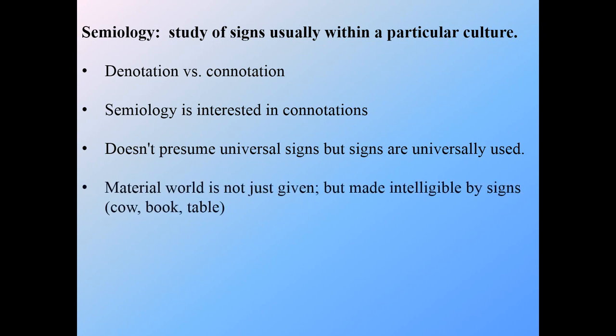The material world is not just given, but it's made intelligible — made comprehensible through signs. In order for us to know what a book is, what a table is, or what a cow is, those are given meaning through signs. A cow in our culture typically means milk, ice cream, and hamburgers. But to somebody of Hindi culture, it means something profoundly different. Similarly with a book, how we make sense of it is only made possible through signs.